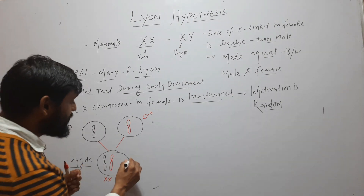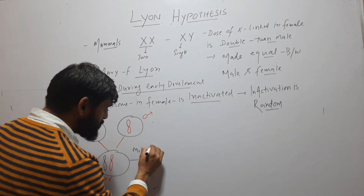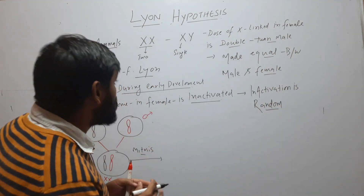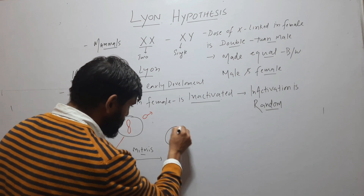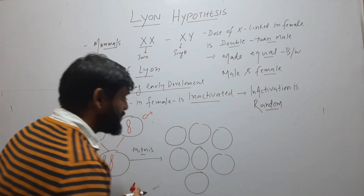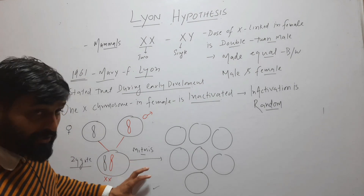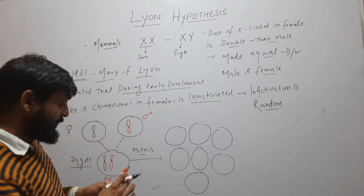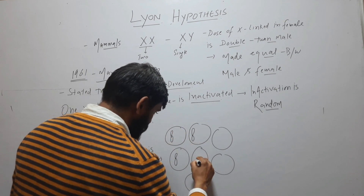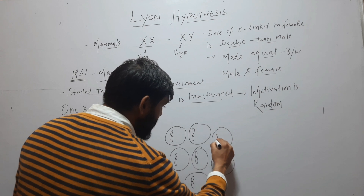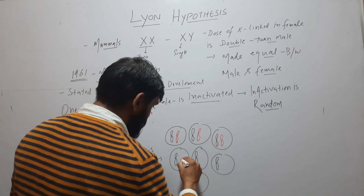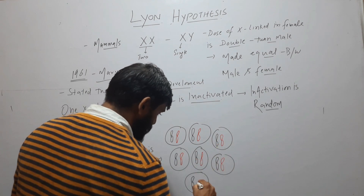Then this zygote will divide by mitosis and form an embryo, and the embryo develops into a new baby. During early development in the embryo, suppose we have some cells — these cells are formed by mitosis from the zygote. All cells in this embryo have one X chromosome from the father and one from the mother.